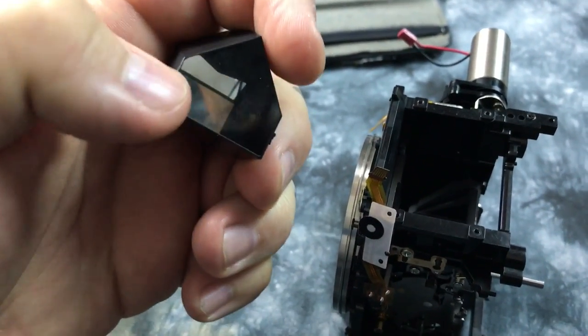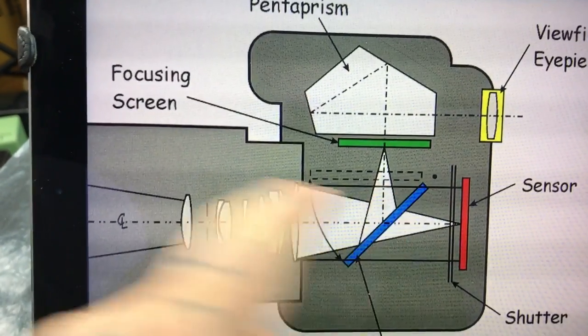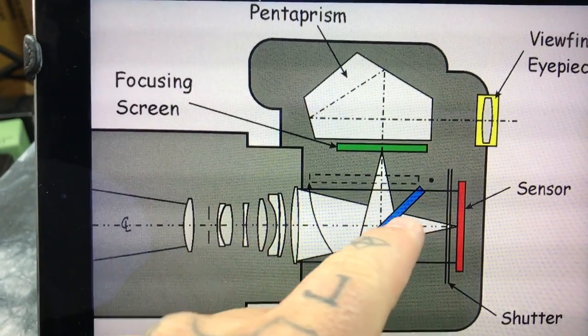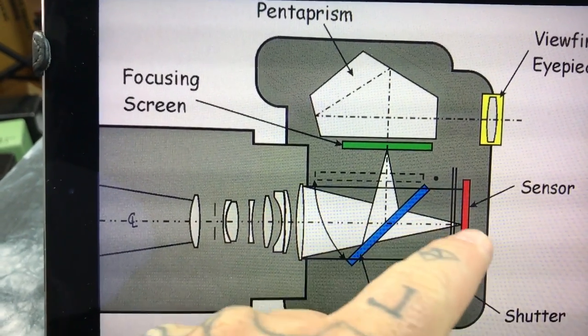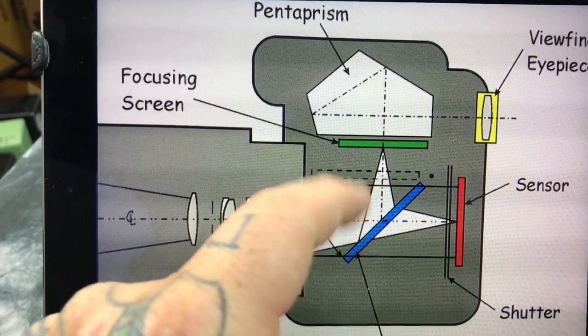Obviously, your viewfinder eyepiece is right behind here. If we take a look at this diagram, okay, we actually have the light coming in from the lens, hitting the reflex mirror, going back to the sensor, which flips up out of the way.